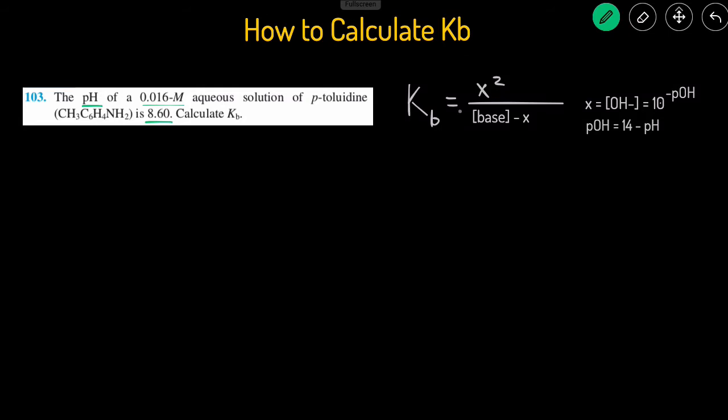following this equation, that Kb is equal to x squared divided by the concentration of the base minus x. x is going to equal the concentration of the hydroxide, and let's use that shortcut in this problem.